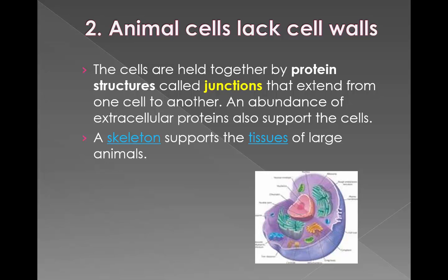The second characteristic is that animal cells don't have cell walls. They are held together by junctions or structures that extend from one cell to another, and the skeleton supports the tissues of the large animals.